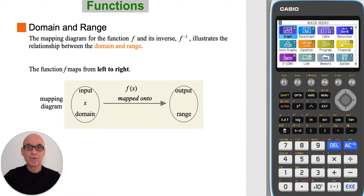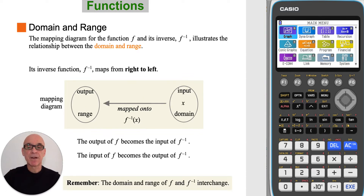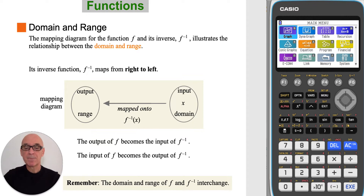The mapping diagram for the function and its inverse illustrates the relationship between the domain and the range. In this mapping diagram, the function f maps from left to right. The domain of f is on the left and the range of f is on the right. The inverse function maps from right to left. The domain of the inverse function is shown on the right, and the range of the inverse function is shown on the left. So the output of f becomes the input of inverse f, and the input of f becomes the output of inverse f. We can simply remember that the domain and range of a function and its inverse interchange.